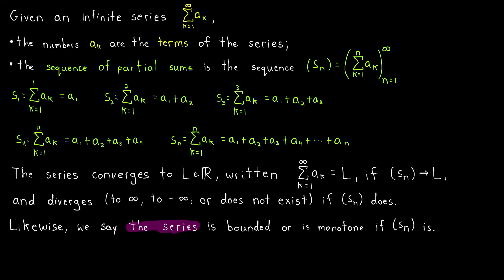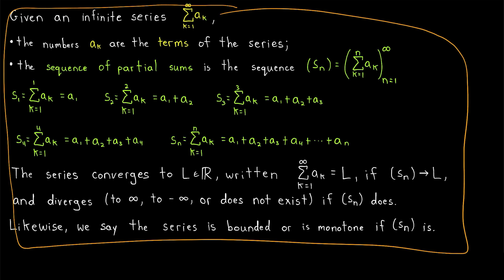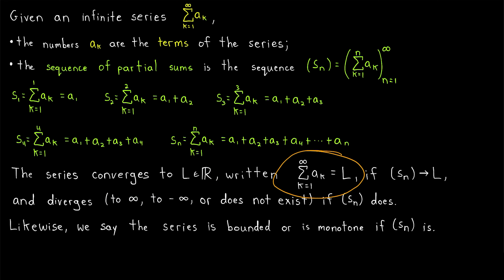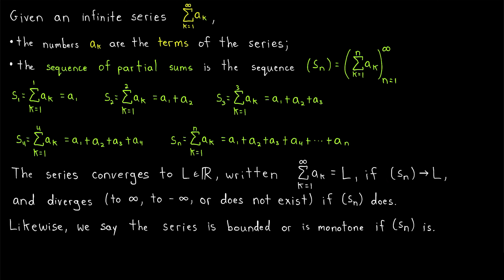We also say that a series is bounded or monotone if the sequence of partial sums is. By the monotone convergence theorem, boundedness and monotoneness are very important properties. The biggest difficulty is getting comfortable with sigma notation when talking about series, but you always want to be thinking about that sequence of partial sums — because that's usually what we're really analyzing. When we say a series converges to a real number, that's because the sequence of partial sums converges to that number. So all of our results about sequences are going to be tremendously useful as we continue studying series.